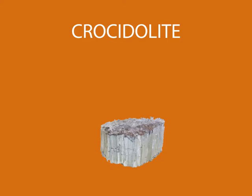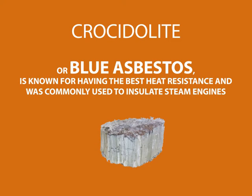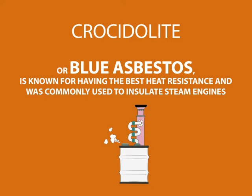Crocidolite, or blue asbestos, is known for having the best heat resistance and was commonly used to insulate steam engines.